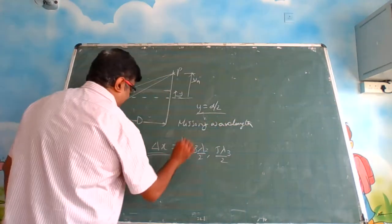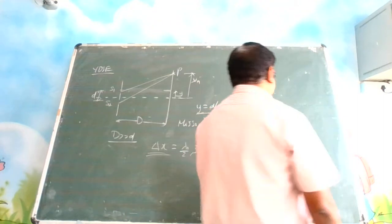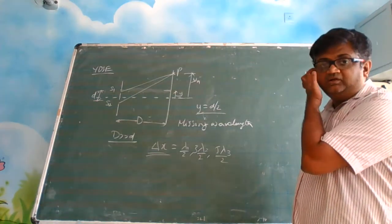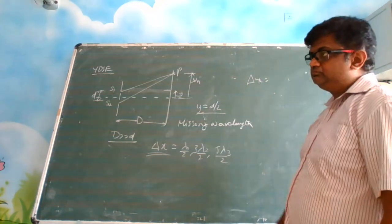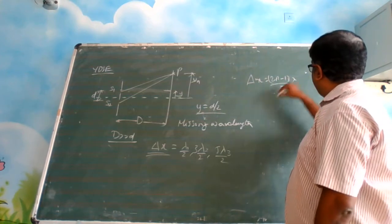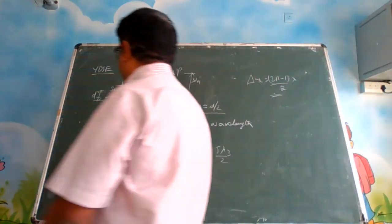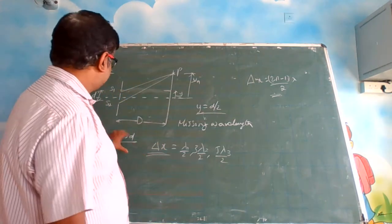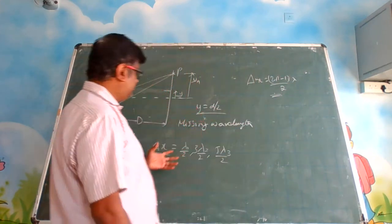When do you get the dark spot? The condition for destructive interference — constructive interference gives bright spots, destructive interference gives dark spots — is when delta x equals (2n − 1)/2 times lambda. In this situation you get dark spots. When the path difference is of this order, you get the missing wavelengths.